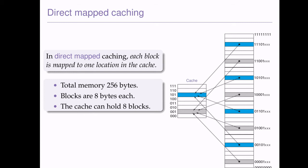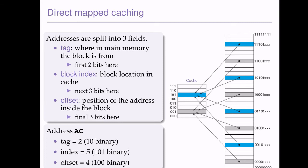Let's look at the conventions for identifying these bytes in a block. Addresses are split into 3 fields. We have the tag — where in main memory the block is found — and that's where those extra 2 bits go. Then we have the block index, the block's location in the cache; we said we needed 3 bits to represent this, and those 3 bits tell us which block is which when it's in the cache. Then we have the offset, which is the position of the address inside the block. We had 8 bytes in each block, so again 3 bits are needed. For address AC, that comes from a tag of 2, an index of 5, and an offset of 4.